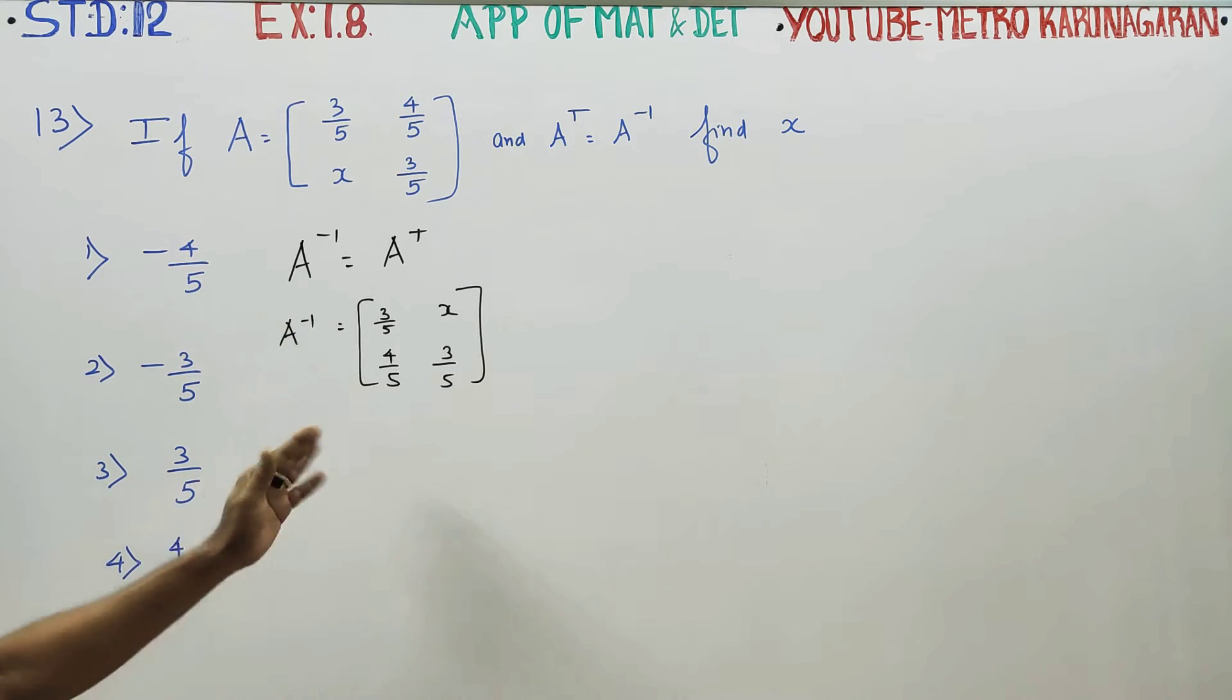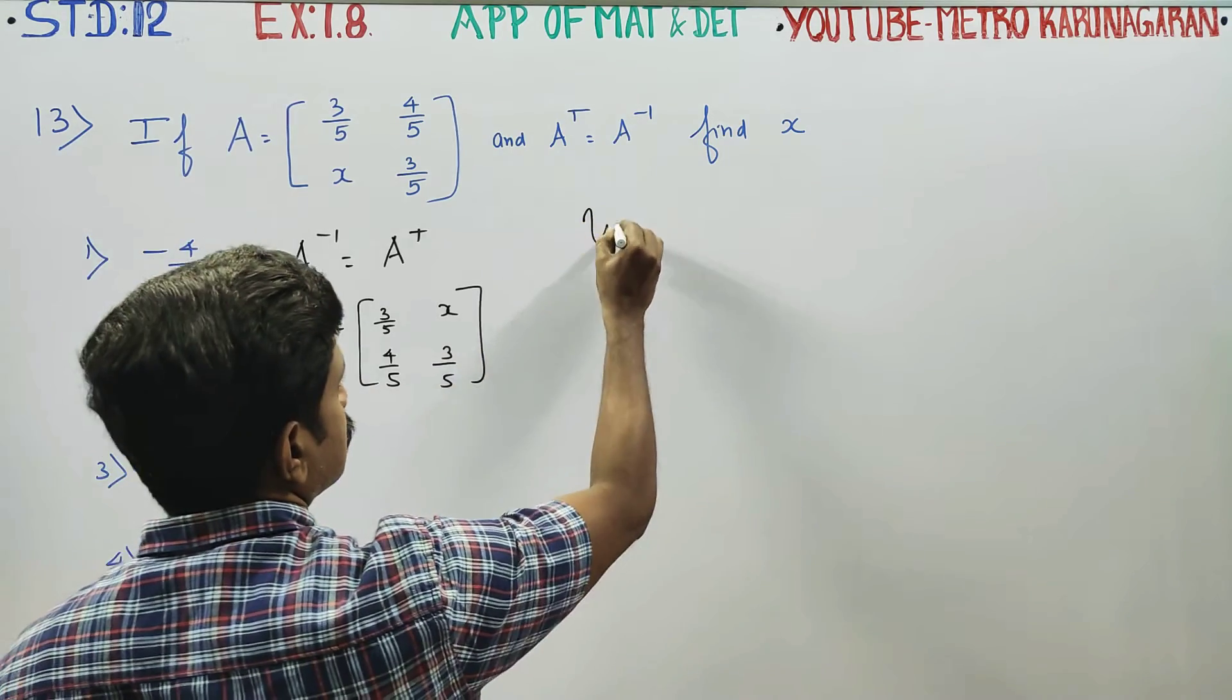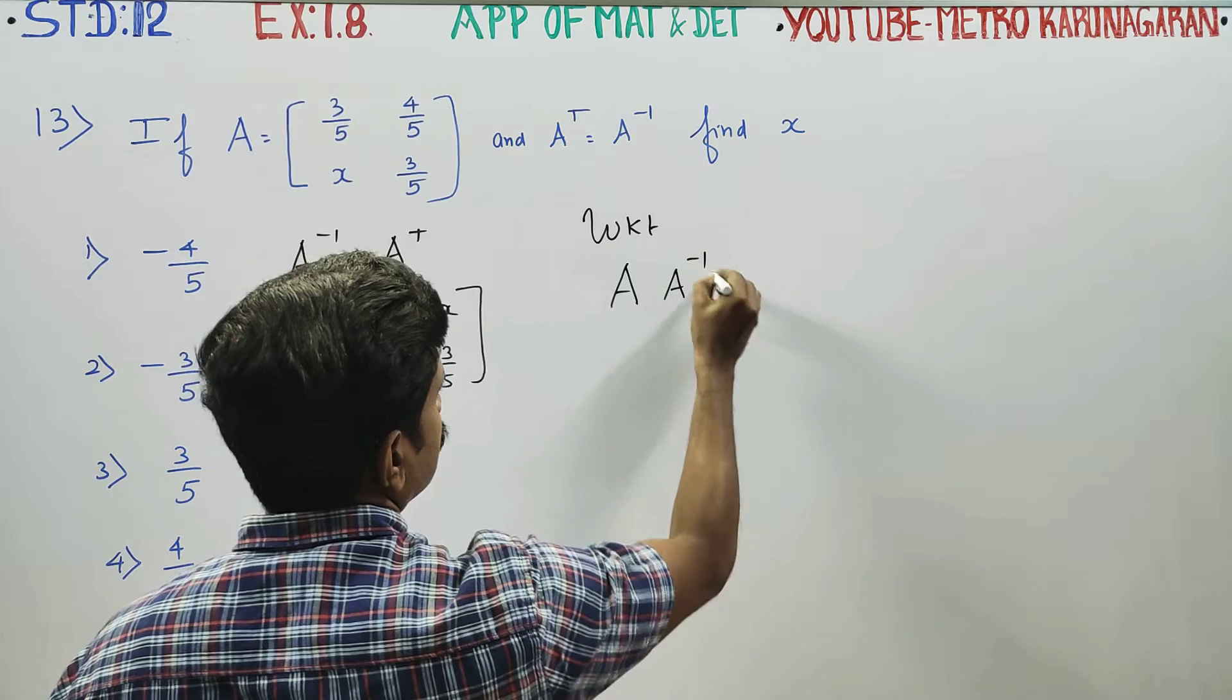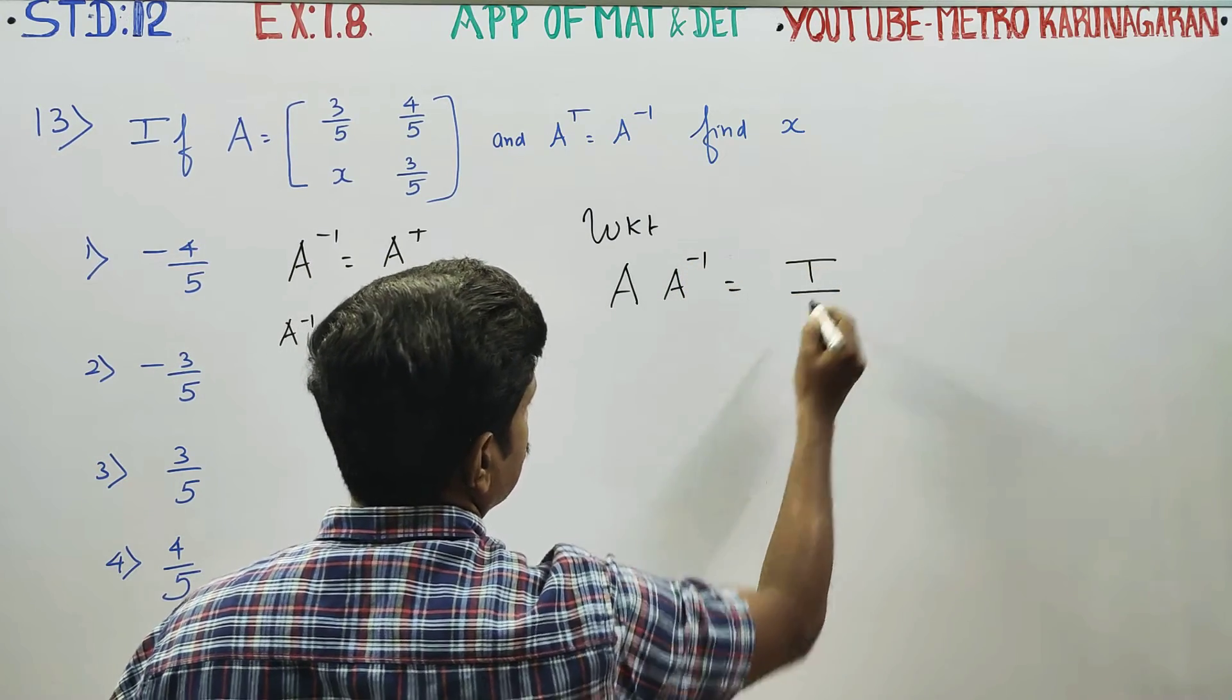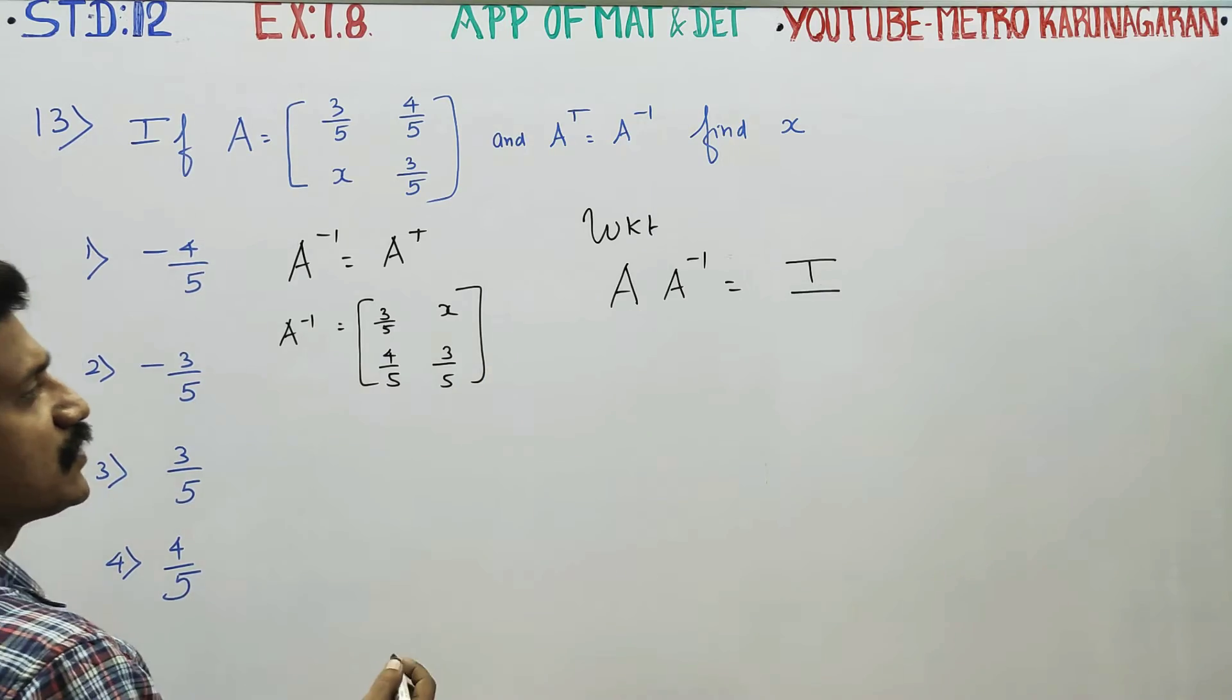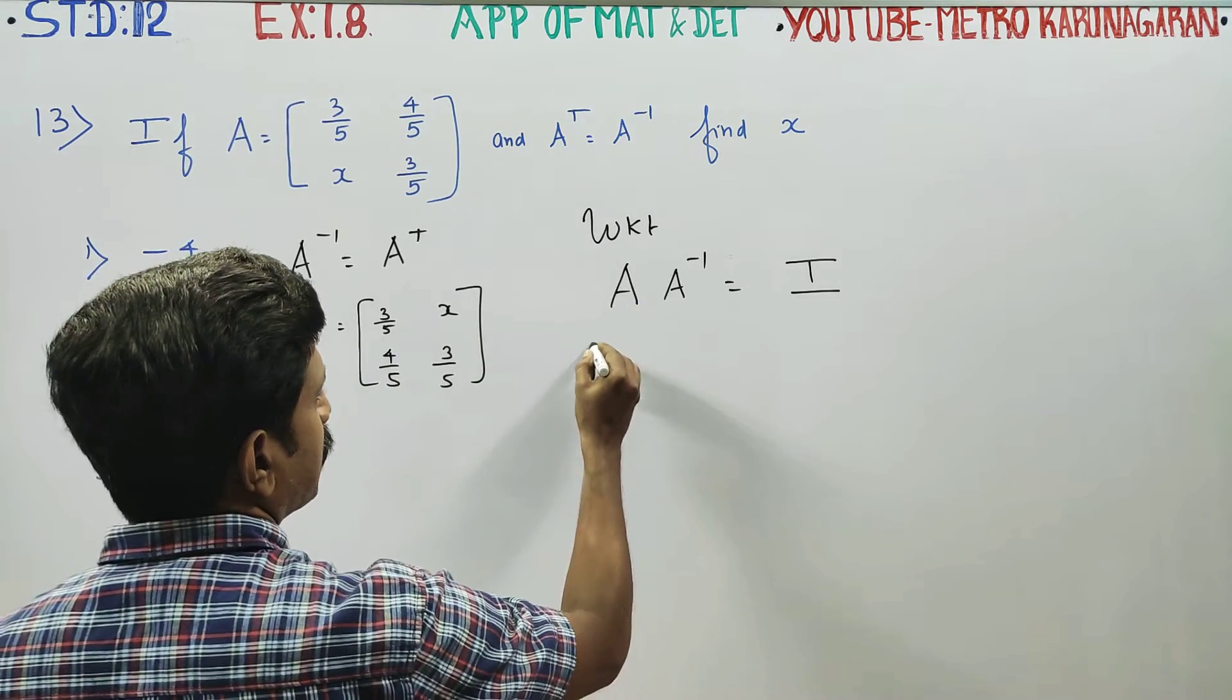After finding the value of A inverse, we know that a matrix into its inverse is the unit matrix or identity matrix. A into A inverse is equal to I. Then we will start A matrix.